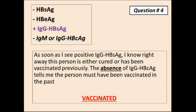Question number 4. Once again, there is no surface antigen, so this person is not currently infected. However, when I look at the antibodies against the surface antigen, they are positive. As soon as I see positive IgGs against the surface antigen, I know right away this person is either cured or has been vaccinated. The absence of antibodies against the core antigen tells me this person must have been vaccinated in the past.